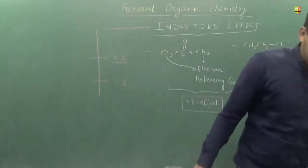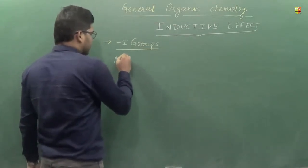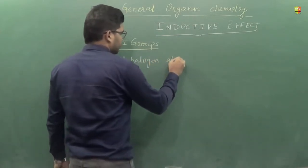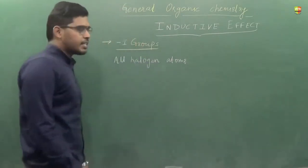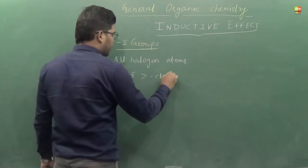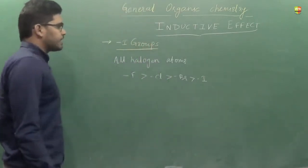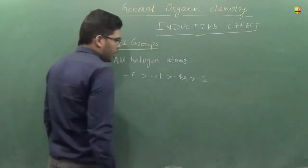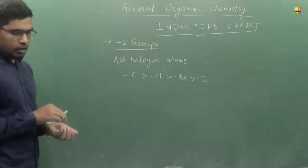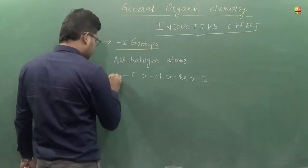For example, all halogens — fluorine, bromine, and iodine — show minus-I nature. The order of minus-I effect in decreasing order is F > Cl > Br > I, because electronegativity also decreases in the same order.